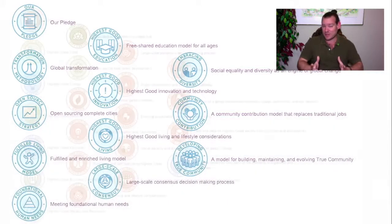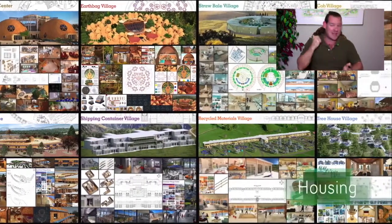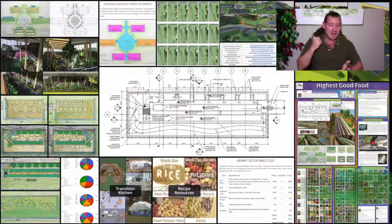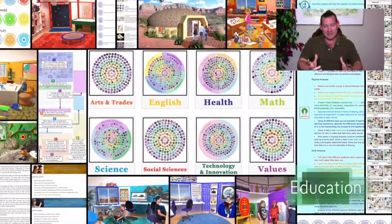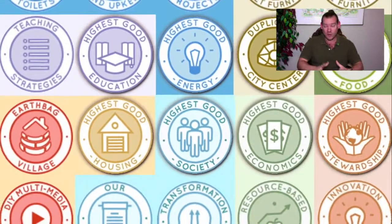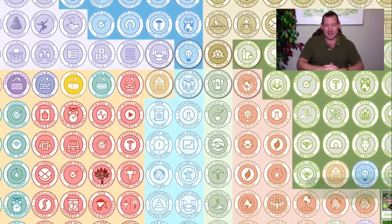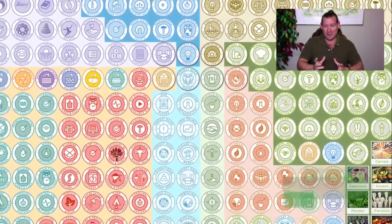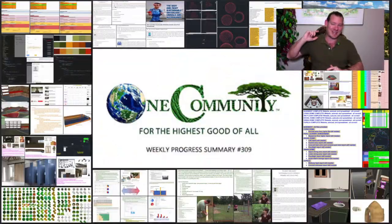We're creating new ways to recycle and repurpose things and open sourcing and free sharing the whole process, so anybody who likes what we're doing can visit One Community, experience it, stay in an earthbag home, a shipping container home, a cob village, a tree house village, a recycled materials village, or a compressed earth block village. If you like that experience, take the plans and replicate it for yourself — either as an individual home or as the complete teacher demonstration hub, housing 50, 100, 200, or 300 or more people at a time in a truly sustainable, replicable circular economy.